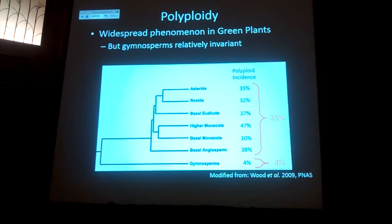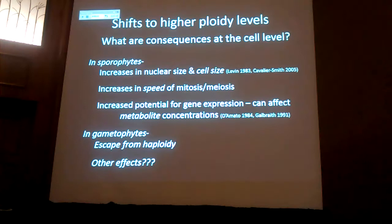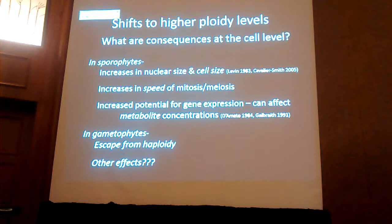Another thing that's really interesting about green plants is there is a lot of polyploidy, and this can have drastic effects on the gametophyte, but it's not very well studied. There's a lot of literature, especially in the past 20 years, about polyploidy and sporophytes — there's actually a talk about that next door right now. But it's not very well known for gametophytes. So what are the consequences at the cell level? In sporophytes, there tends to be an increase in nuclear size and cell size, it increases the speed of glycolysis and meiosis, and there's increased potential for gene expression, such as dosage effects.